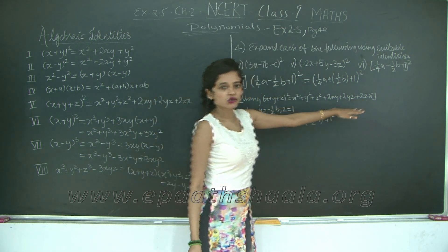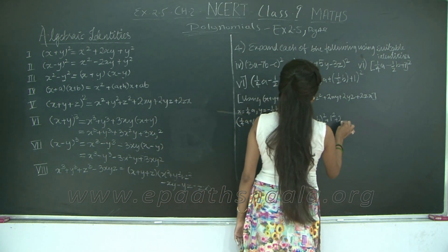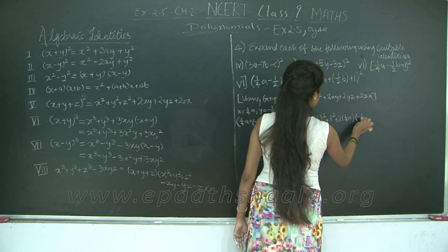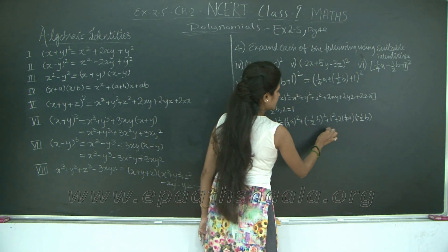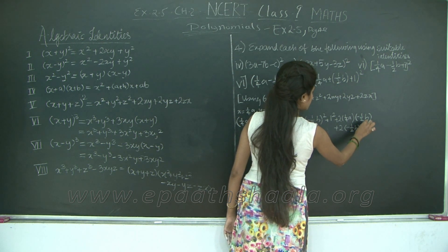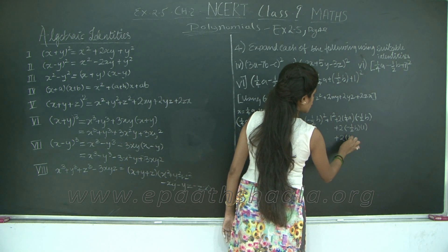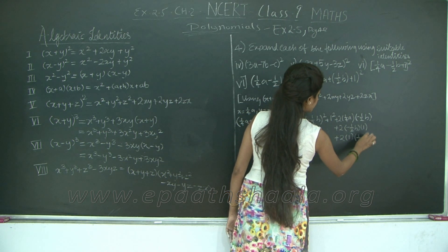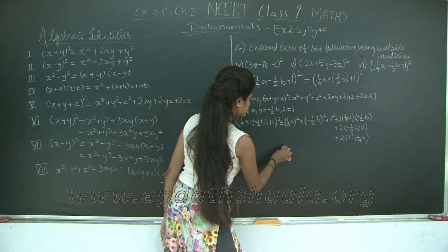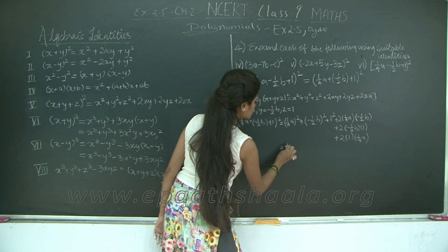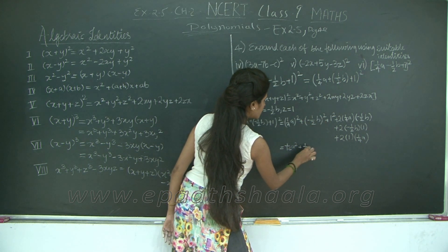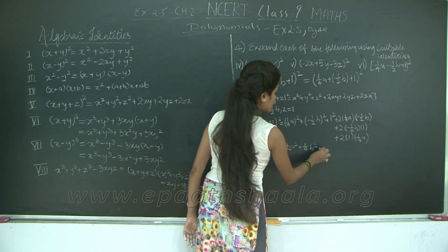Let's go ahead and expand: (1/4·a + (-1/2·b) + 1)² = x² + y² + z², which is (1/4·a)² + (-1/2·b)² + 1². Expanding: (1/4·a)² = 1/16·a², (-1/2·b)² = 1/4·b², and 1² = 1. Now let's write 2xy: 2 × (1/4·a) × (-1/2·b).